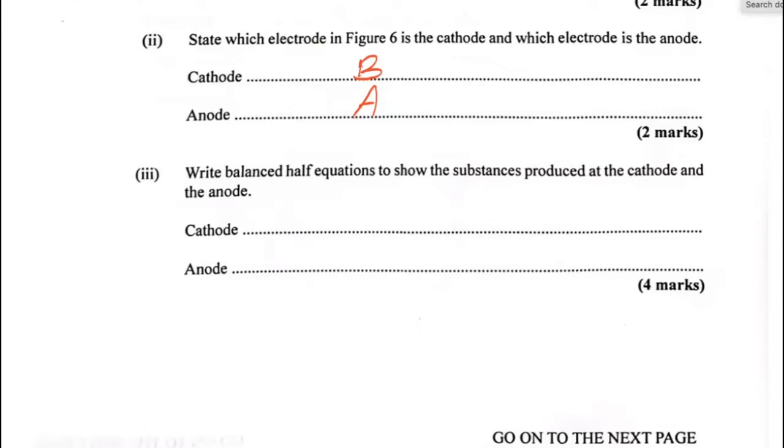Part 3 of B. Write balanced half equations to show the substances produced at the cathode and at the anode. So A comes before C, so I'll go for the anode. It is dilute sodium chloride solution. So the ions that are competing - both chloride ions and OH ions will migrate over to the anode. But the one that will be discharged preferentially is the one that requires less energy in this case.